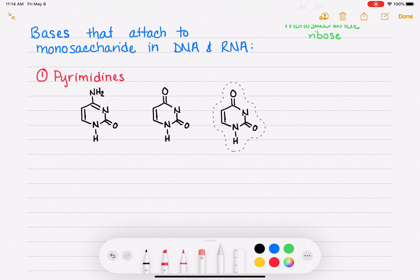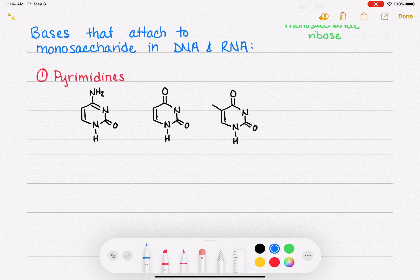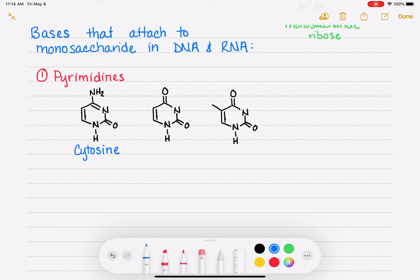But that's the only modification that we make. So these are the three different pyrimidines. Their names are cytosine. And it gets the abbreviation C.